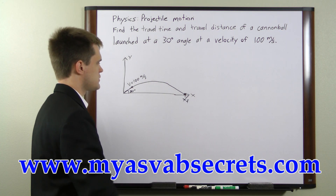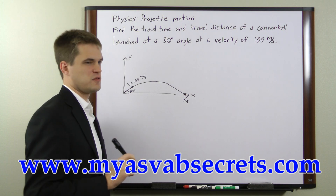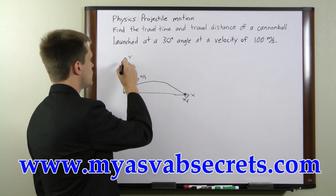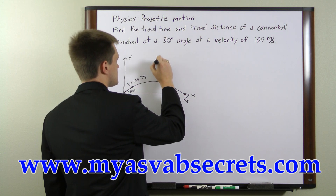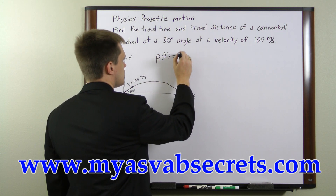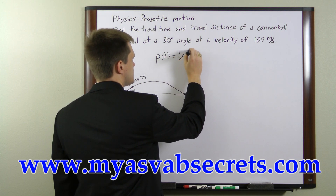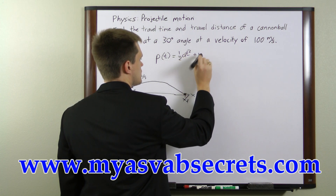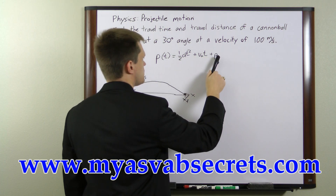To solve this, we're going to need to use equations of motion. Since it's two-dimensional, we're going to have to use two different equations of motion — one for the X direction and one for the Y direction. Your basic equation of motion looks like this: your position at time t equals one-half times the acceleration of the object times t squared, plus your initial velocity v-naught times t, plus your initial position p-naught.